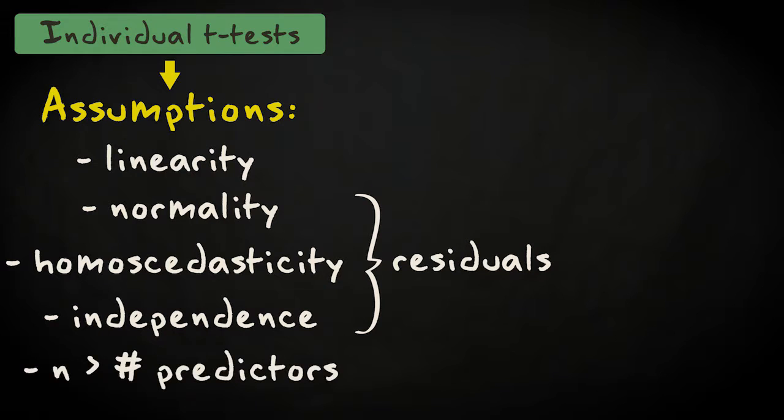Also, the number of observations needs to be high enough relative to the number of predictors. I'll discuss these assumptions and how to check them later on.